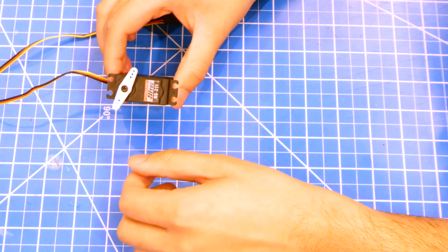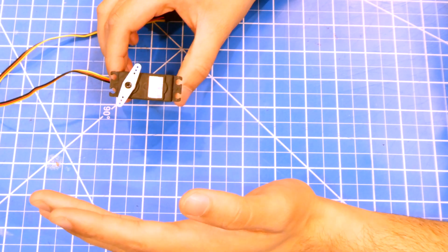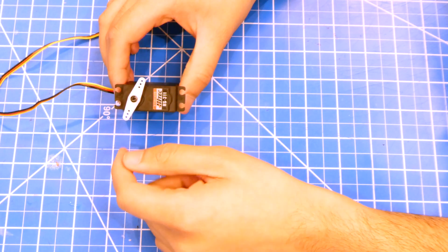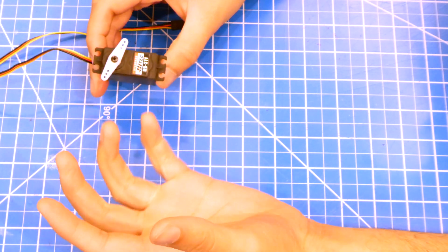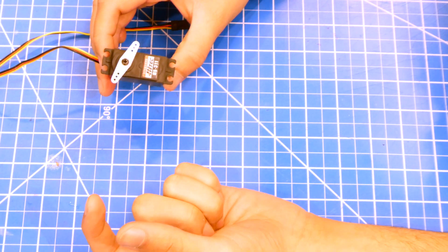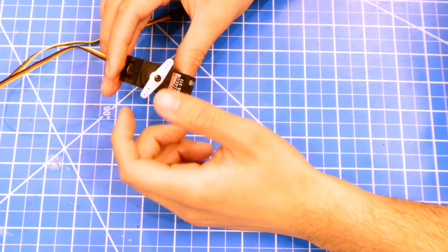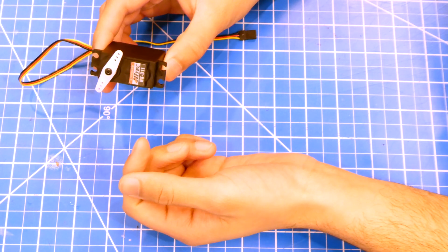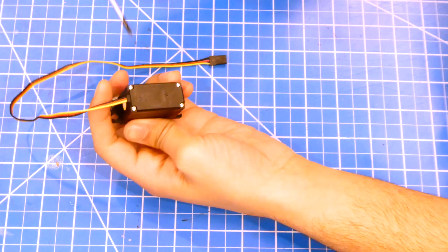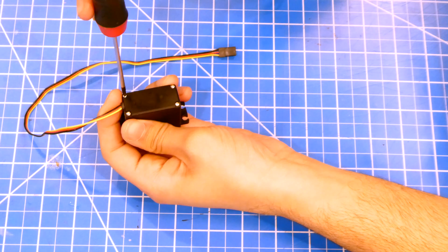But you can't find high torque continuous rotational servos or just motors where you can control the speed. You can't find high torque versions that are in this casing as you would a normal servo. So there's a hack that's out there where you can make it a continuous rotational servo if you just get rid of the potentiometer.